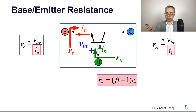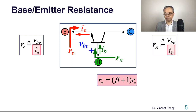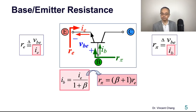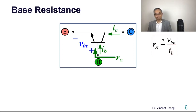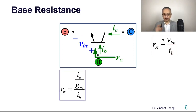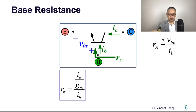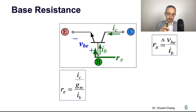R-pi equals RE times (1 + beta). If you have trouble understanding this by inspection, just do the mathematical derivation: plug IB equals IE divided by (1 + beta) into the definition of R-pi and you will see the base resistance. Let's follow this formulation for R-pi and RE.